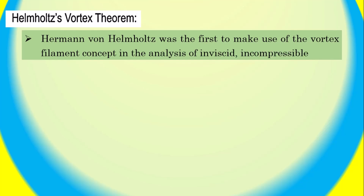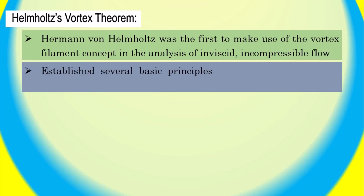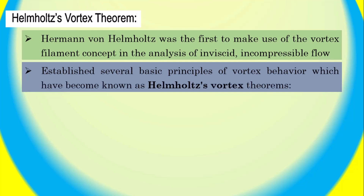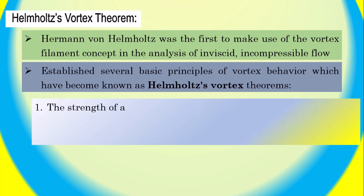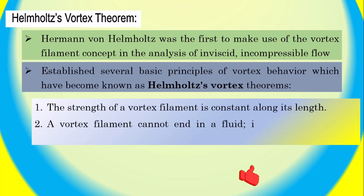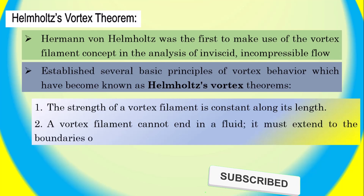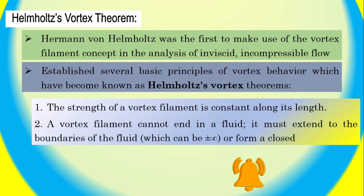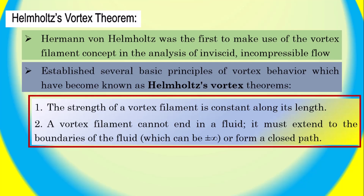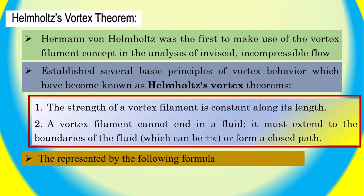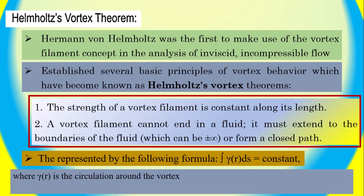Helmholtz Vortex Theorem. Helmholtz is a mathematical principle that describes the behavior of vortices in fluids. Helmholtz was the first to make use of the vortex filament concept in the analysis of inviscid, incompressible flow. It states that the circulation around a vortex filament is constant, meaning that the fluid flow around the vortex filament is always the same, regardless of the fluid's velocity or pressure. This is represented by: integral of γ(r) times ds equals constant, where γ(r) is the circulation around the vortex line and ds is an infinitesimal element of the vortex line. A vortex filament cannot end in a fluid — it must extend to the boundaries of the fluid, which can be positive or negative infinity, or form a closed path.